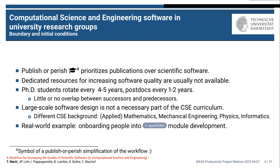However, there are additional constraints in this situation. At universities, we have the publish-or-perish culture that prioritizes publications over scientific software. I've placed an academic hat throughout the talk to emphasize points where simplification has been done — so to say, to publish instead of perish. The problem is that dedicated resources for increasing software quality for research at universities are usually not available. We also have rotation of employees — PhD students every four to five years, postdocs every one to two years — and often very little overlap between successors and predecessors, which complicates software quality a lot.